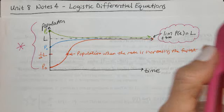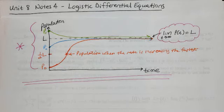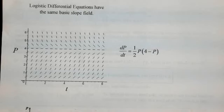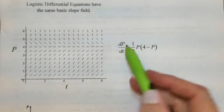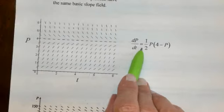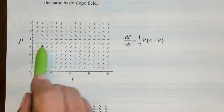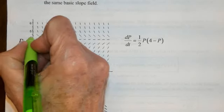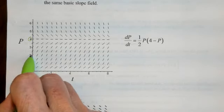This graph describes every logistic differential equation — it's a good one to keep in your head and it makes sense. Before going to the notes, let me show you some real slope fields from logistic differential equations. In this first slope field, what is the limiting value? The limit as time goes to infinity is clearly four.